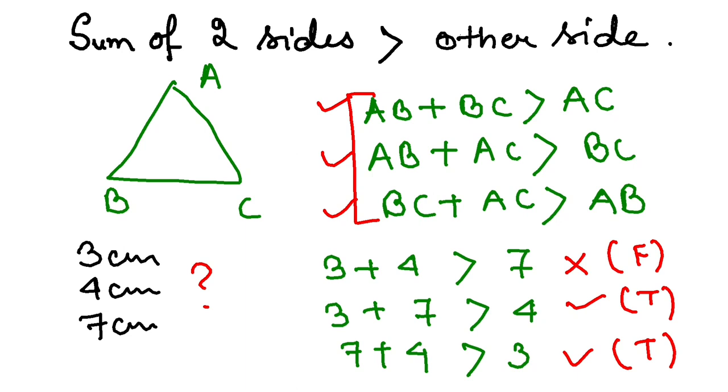So as you can see, these two conditions are true, but this condition is false. So as I said, it has to satisfy all the conditions. So basically, 3, 4, and 7 cannot create a triangle.